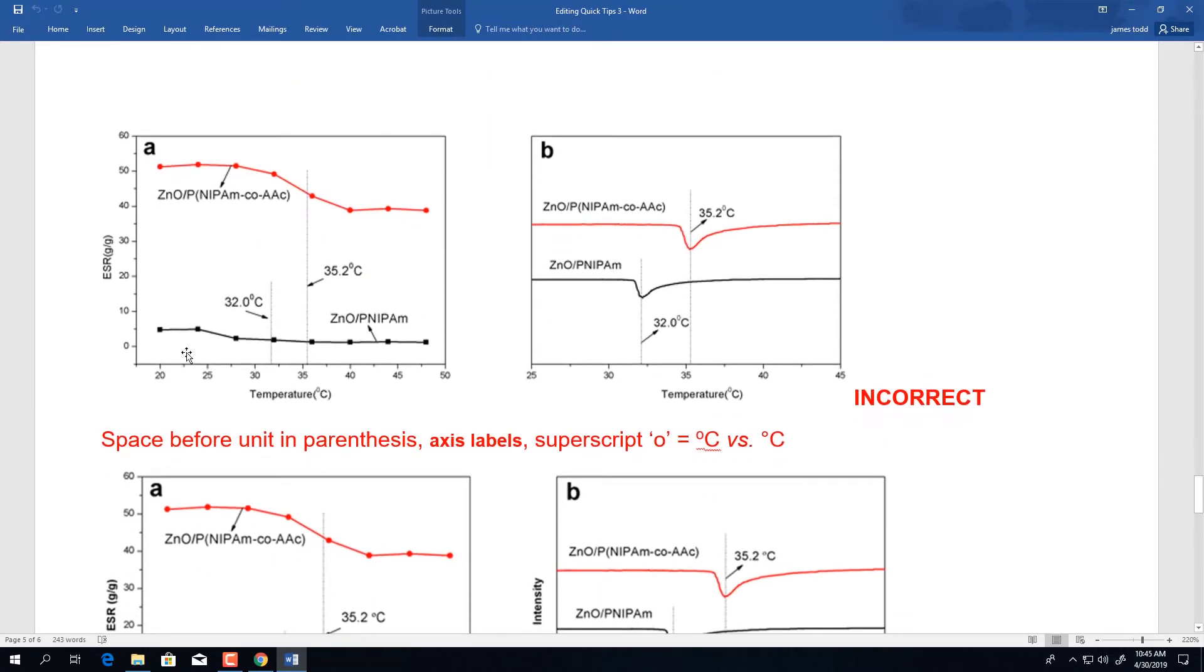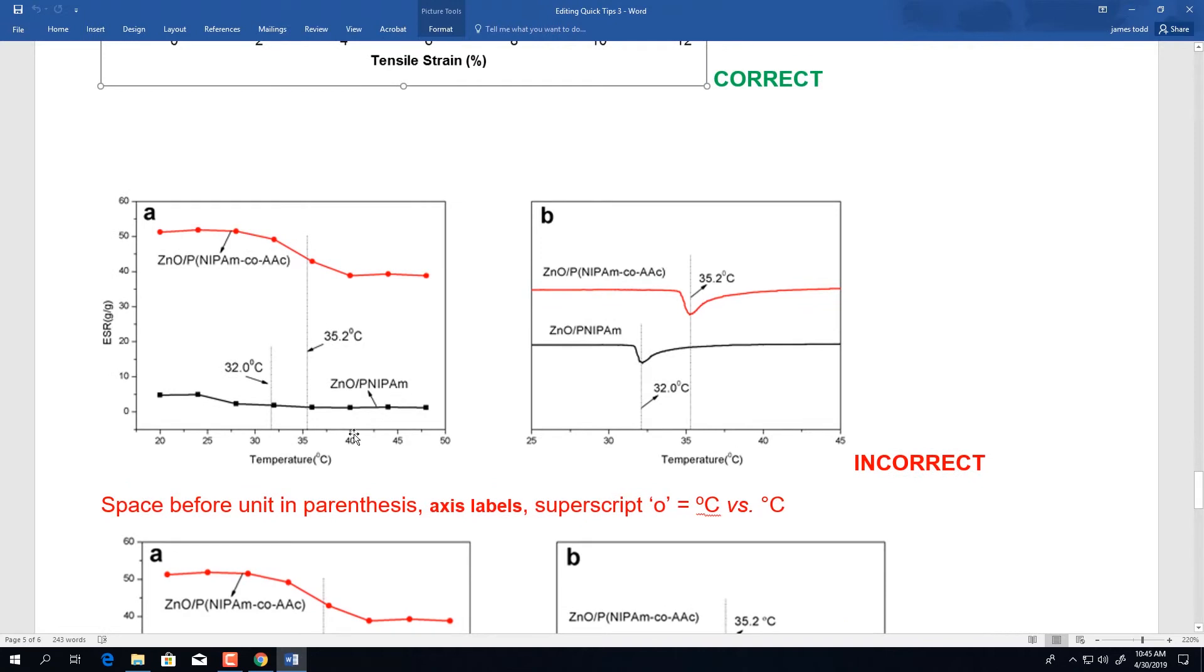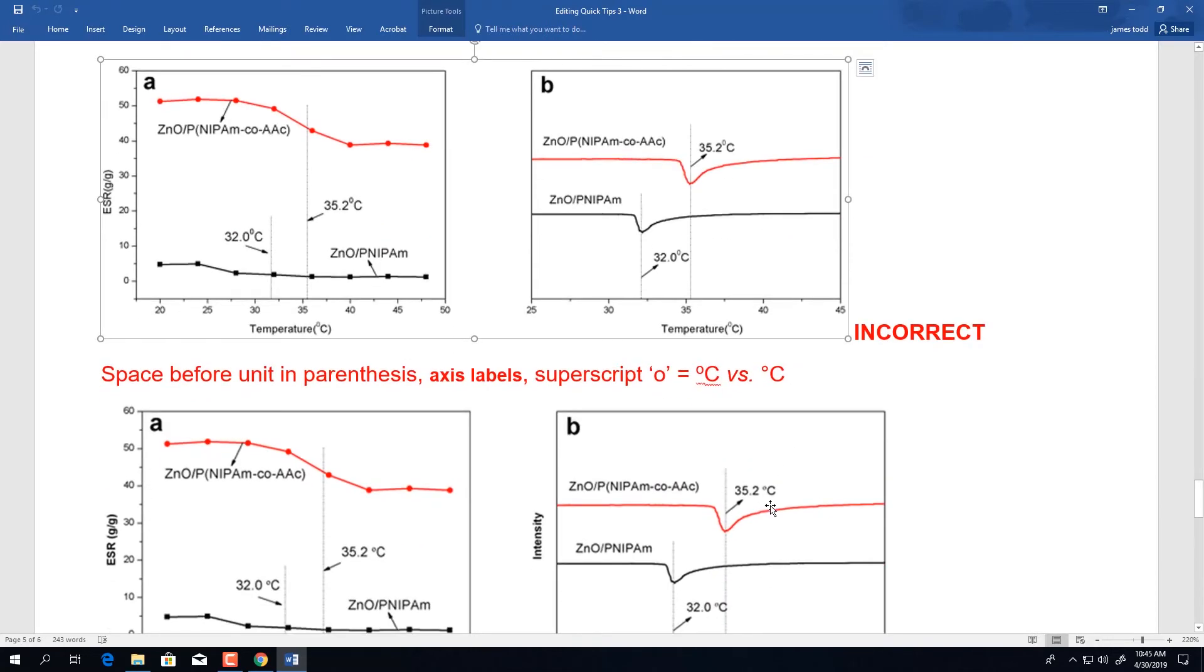In this image, we have another example where the degree symbol was not used and instead a superscripted zero was used. Here is the example where the superscripted zero was used throughout. You can tell in the newly formatted image that the degree symbol is now used. Notice how the superscripted zero appears at a different height and different size than the degree symbol being used.